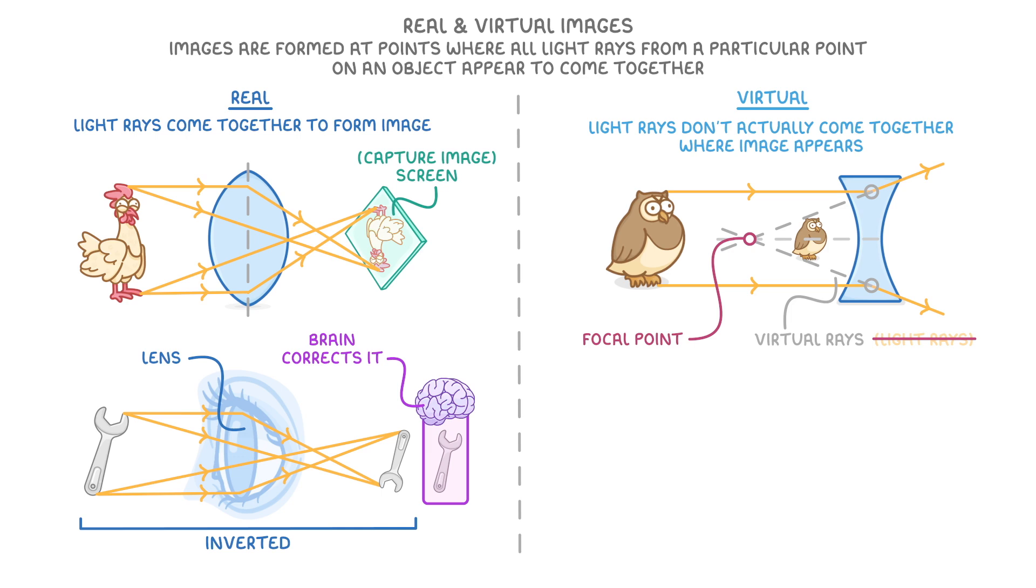The most common example of a virtual image is whenever you look in the mirror. The images you see aren't real images, because although the images appear to be behind the mirror, there can't really be any rays behind the mirror, because it's a solid object that light can't pass through. So they're only virtual rays forming a virtual image.